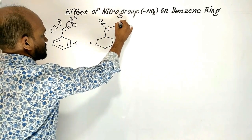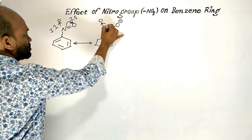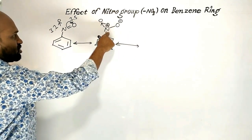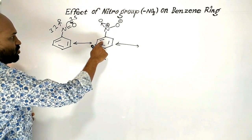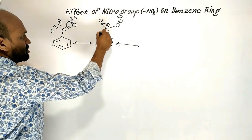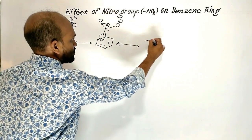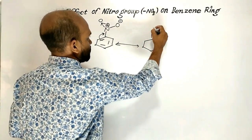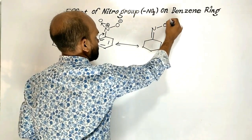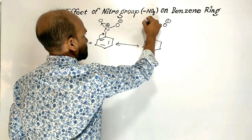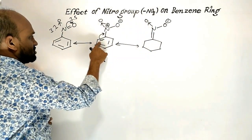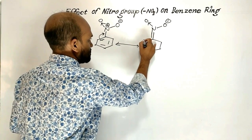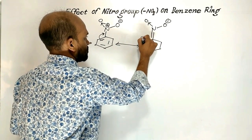Because of the positive charge over nitrogen, the pi bonded electrons move towards the carbon-nitrogen bond to form a new structure where a nitrogen-carbon double bond is formed. Oxygen becomes negatively charged on one side, and as these pi bonded electrons move towards the carbon-nitrogen bond, the ortho carbon gets positively charged.